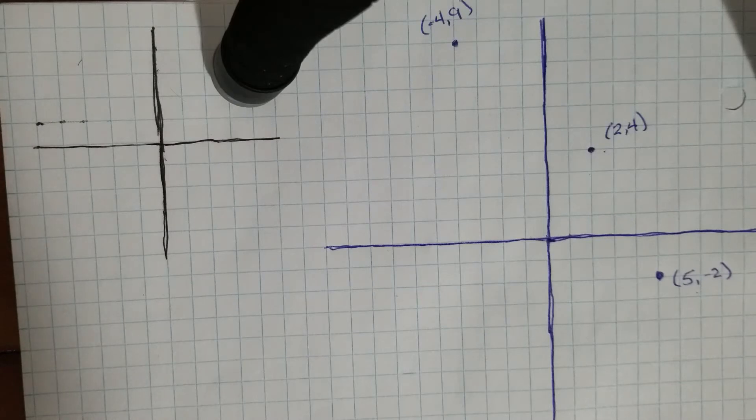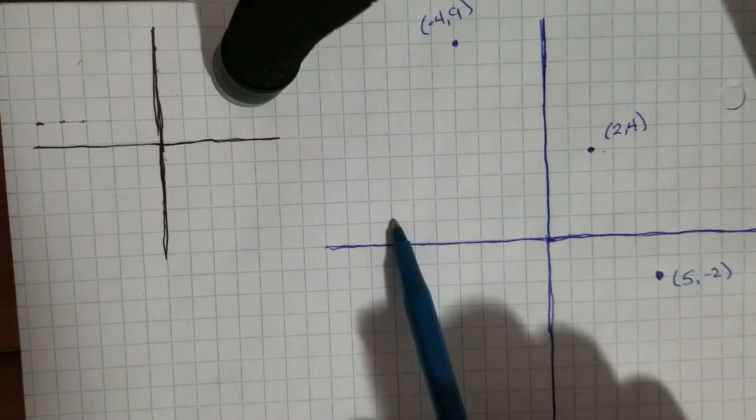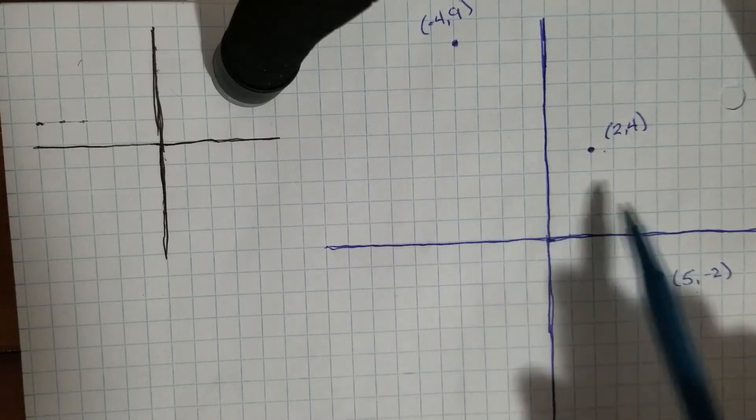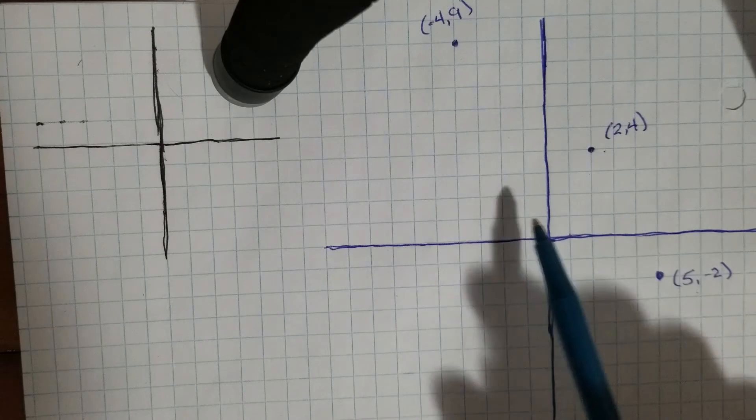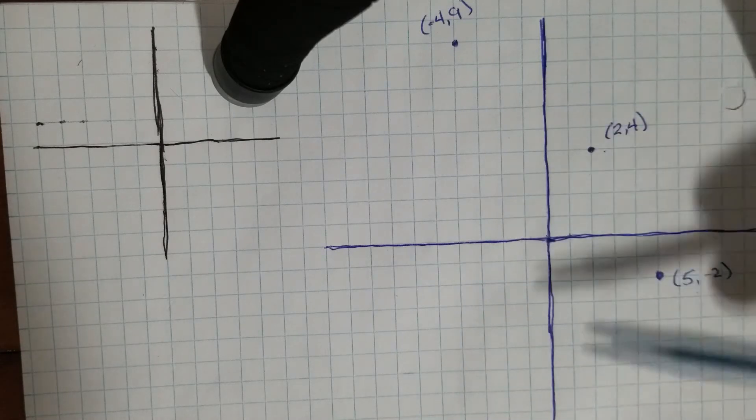So on a graph, when we're describing a translation, we're trying to figure out how much left or right it goes, how much on the X axis does it go, and how much up or down does it go, how much in the Y axis.